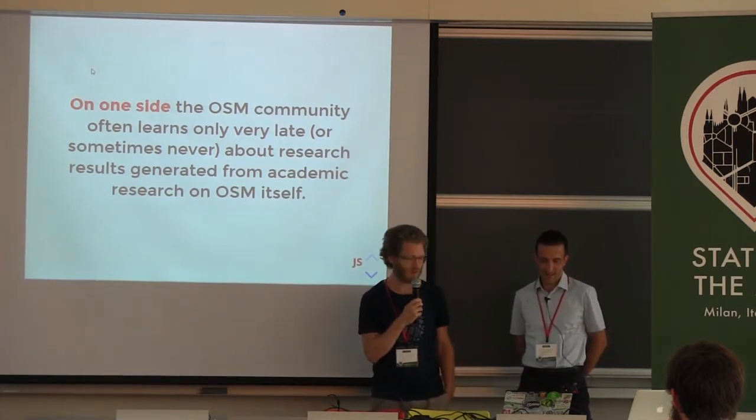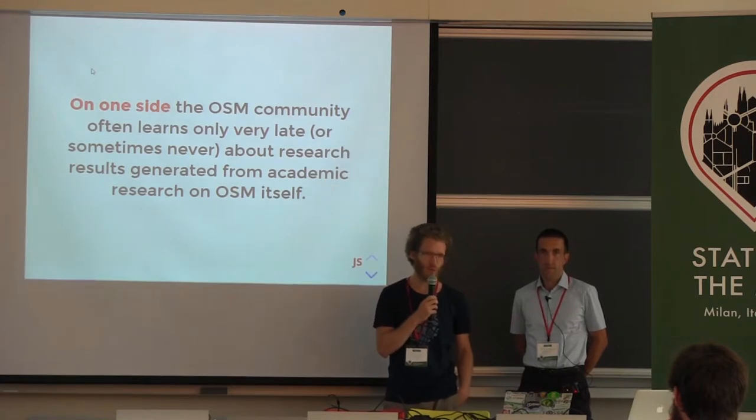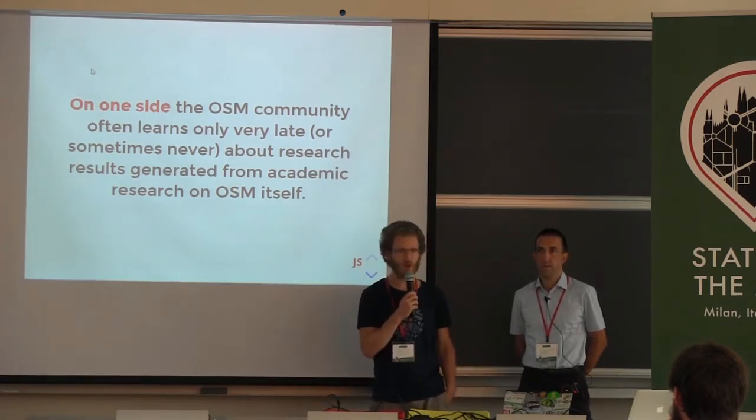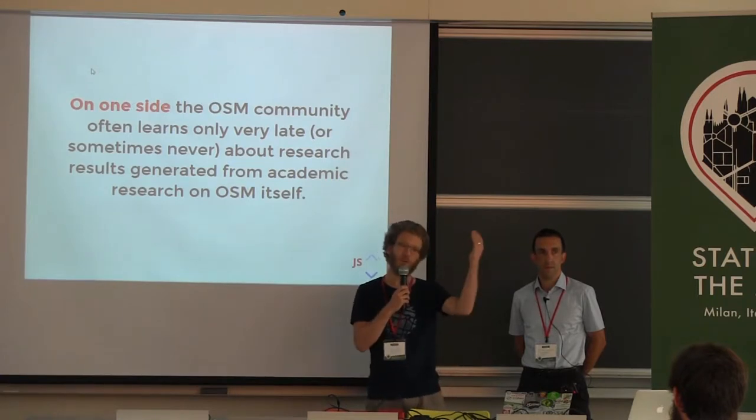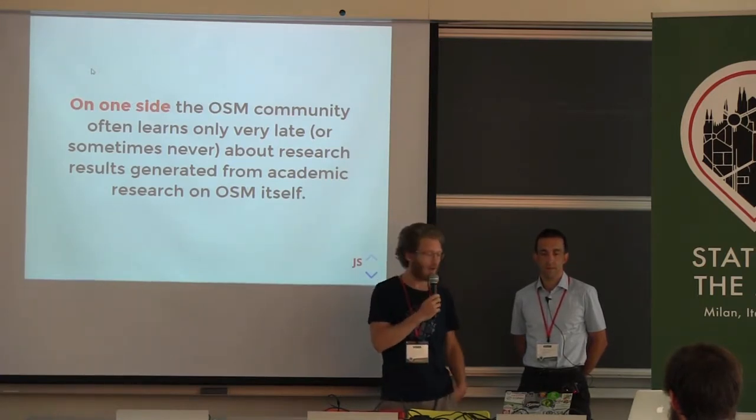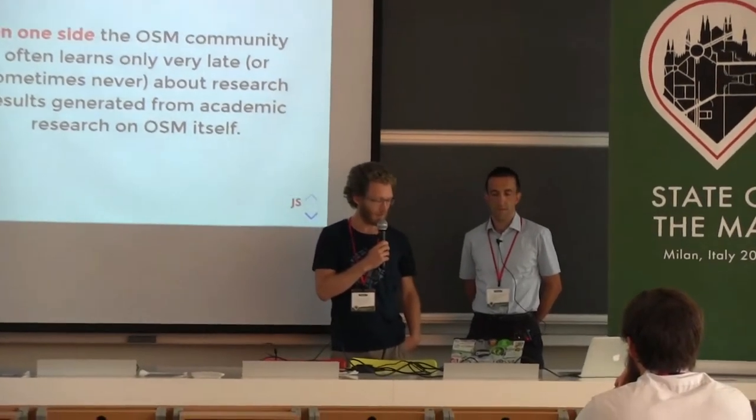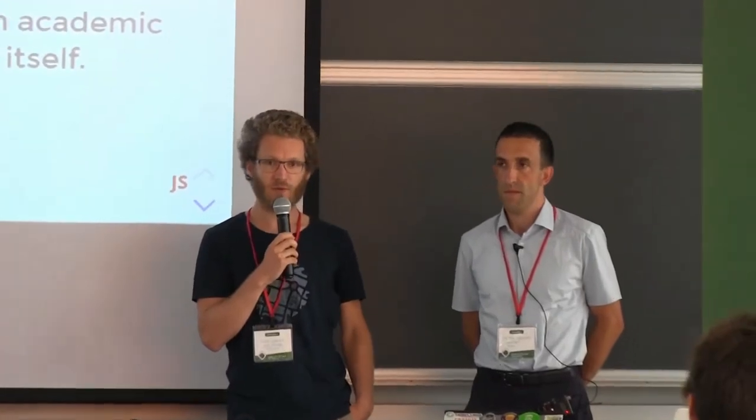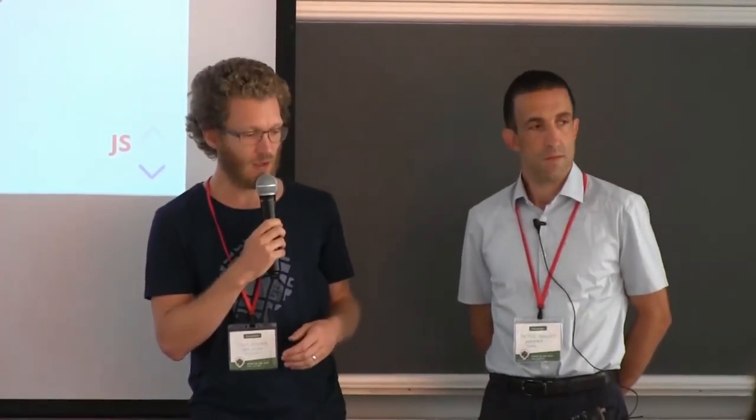From the OpenStreetMap side, one of the problems is that we don't always hear about all the research, or when we do it's in passing and it's very hard to understand. So there is definitely a chance to improve the way it's communicated towards the community. On the other hand, when academics start doing their research, the timing of involvement with the wider OpenStreetMap community isn't always optimal — it starts at the beginning, when deciding what to research.